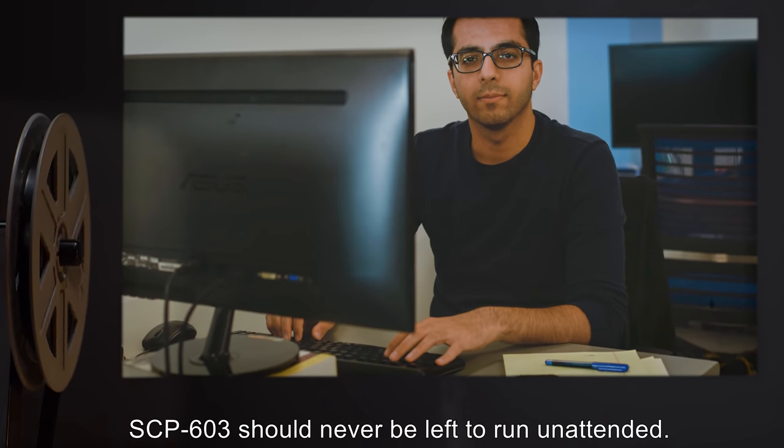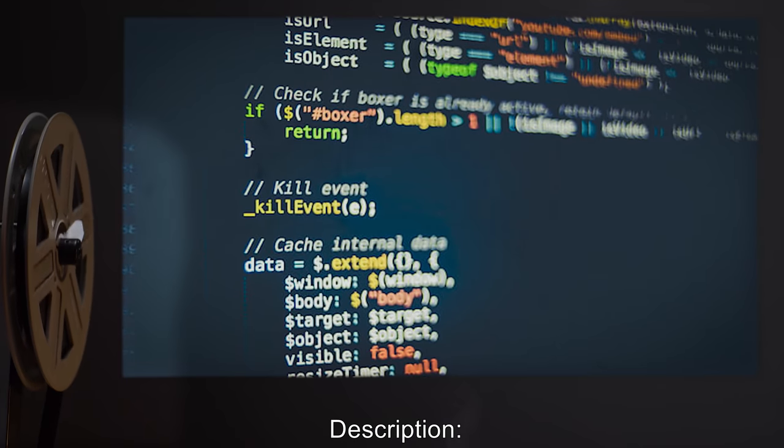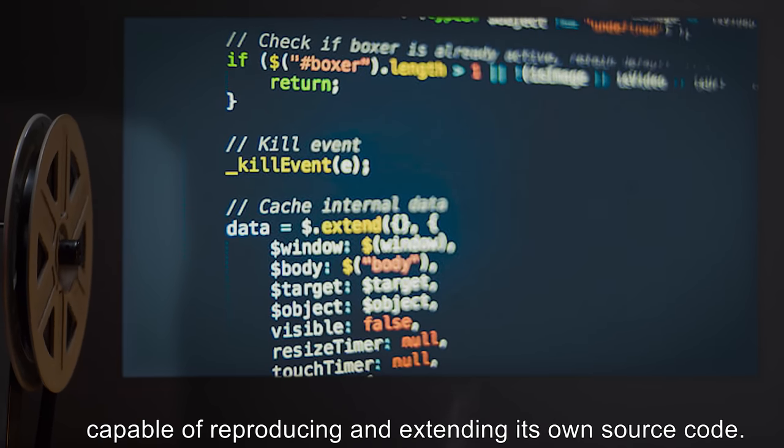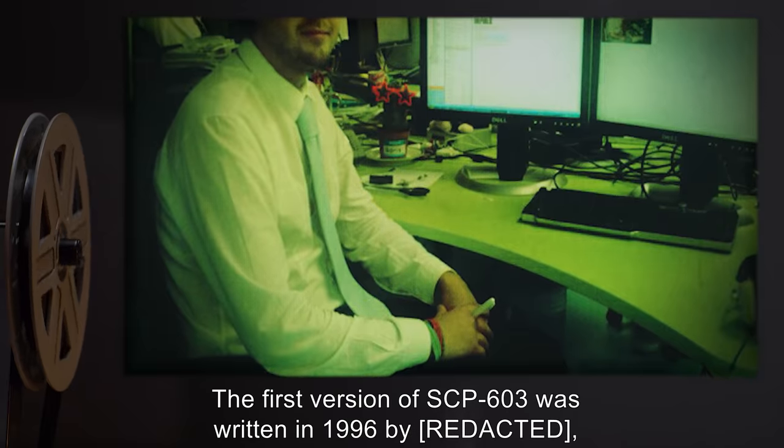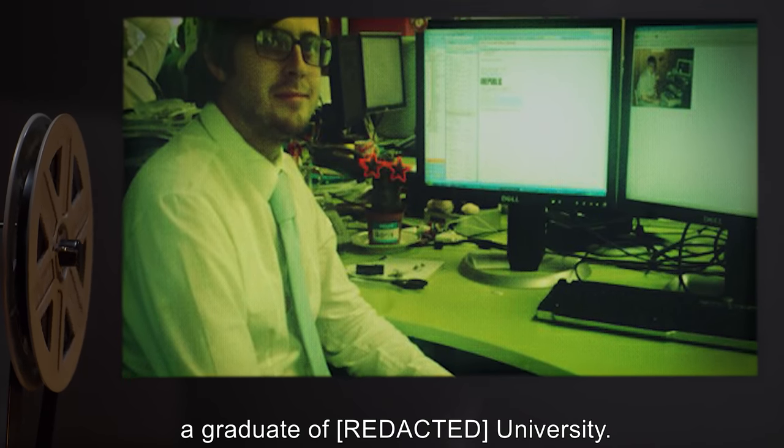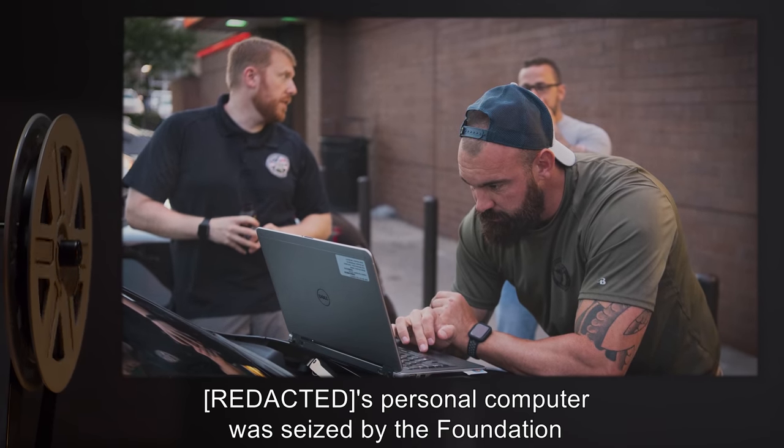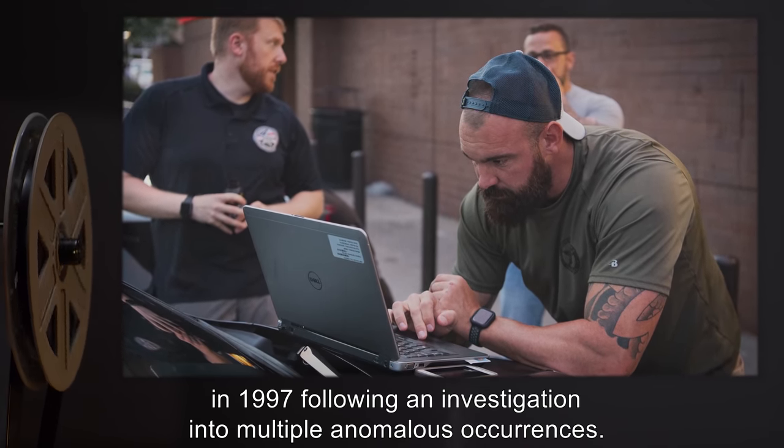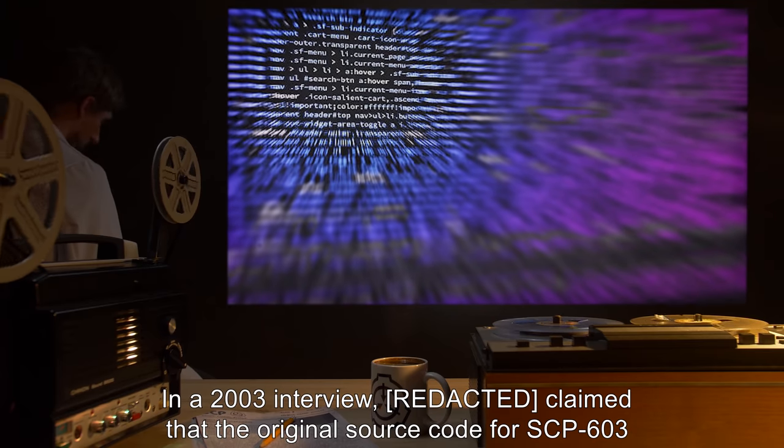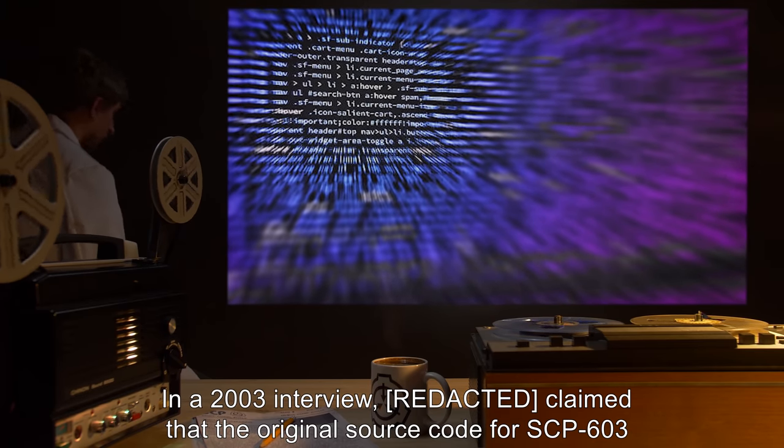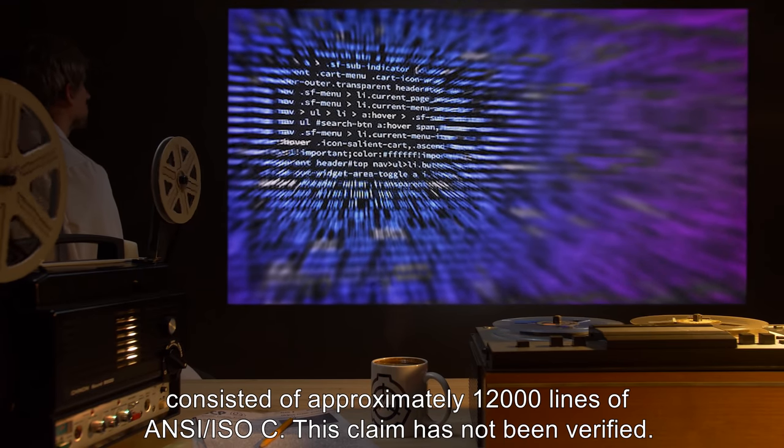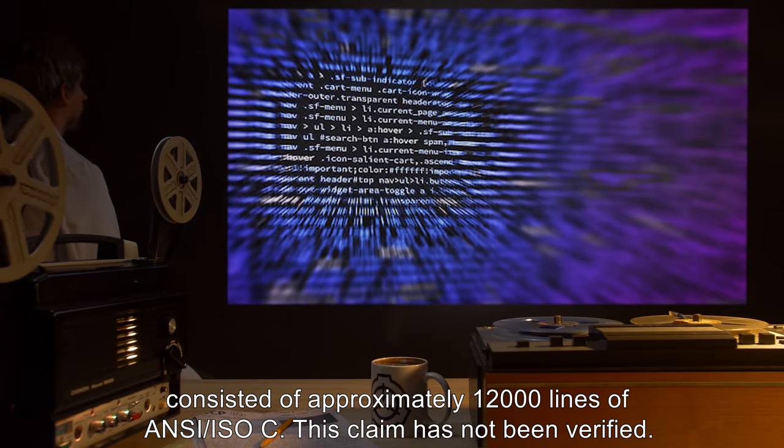SCP-603 should never be left to run unattended. Description: SCP-603 is a self-replicating computer program capable of reproducing and extending its own source code. The first version of SCP-603 was written in 1996 by a graduate of a university. Its personal computer was seized by the Foundation in 1997. In a 2003 interview, it claimed the original source code consisted of approximately 12,000 lines of ANSI-ISO C. This claim has not been verified.